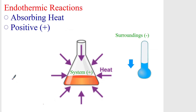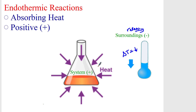An endothermic reaction is the exact opposite. When the change in temperature goes down, it's ultimately getting colder. We don't use the terms hot and cold — we're going to be looking at what's happening with the system and the surroundings. So when the change in temperature is going down, that means the surroundings is releasing heat to the system. The system is absorbing that heat, becoming positive in its delta H. We call that an endothermic reaction.